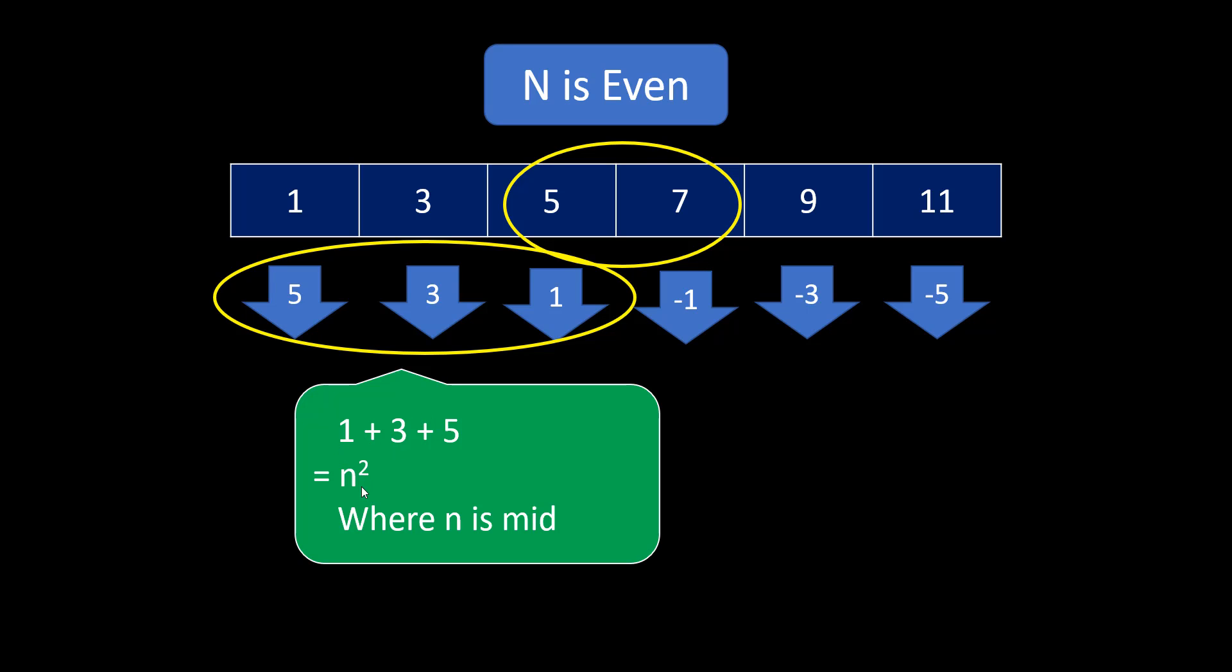For this, your formula is nothing but n square where my n is the mid that is given by n by 2 as we found out earlier. So, over here 6 by 3 would be 3 and 3 square is 9 and so is our answer.